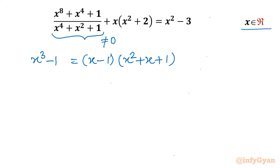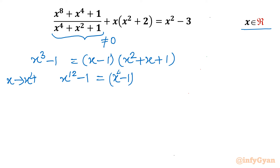Now I will replace x. Let us replace x with x⁴. This formula will convert into x¹² - 1 = (x⁴ - 1)(x⁸ + x⁴ + 1). The second bracket, x⁸ + x⁴ + 1, is our numerator.